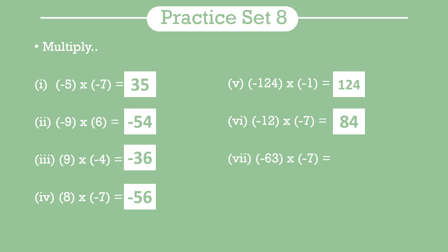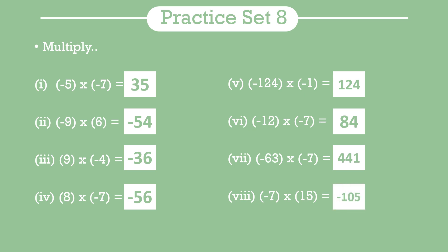(-63) × (-7): negative × negative = positive, so 63 × 7 = 441. Next, (-7) × 15: 7 × 15 = 105, negative sign because negative × positive = negative, so -105.